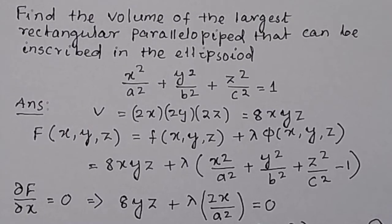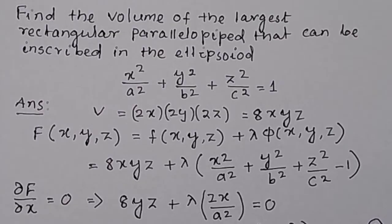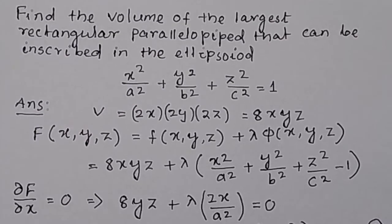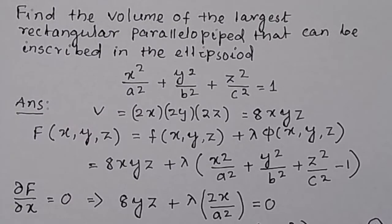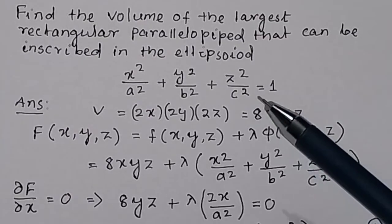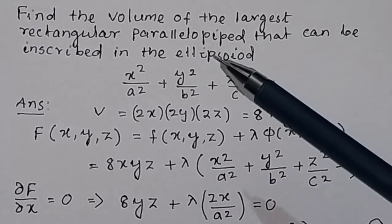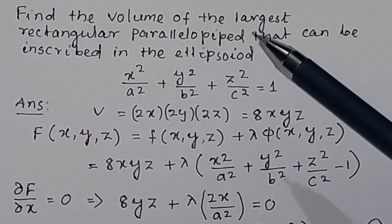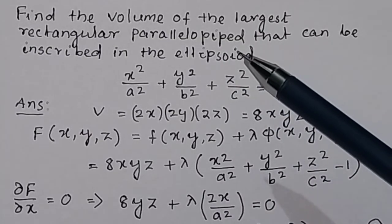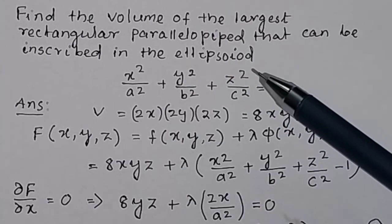Find the volume of the largest rectangular parallelepiped that can be inscribed in the ellipsoid x²/a² + y²/b² + z²/c² = 1. The equation of the ellipsoid is given and we have to find out what will be the volume of the largest rectangular parallelepiped that can be inscribed in this ellipsoid.